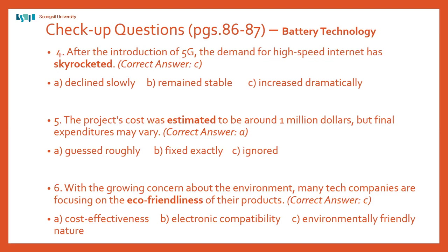Skyrocketed — answer C: increased dramatically. Number five: estimated — A: guessed roughly. And number six: eco-friendliness — correct answer is C: environmentally friendly nature.